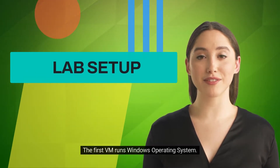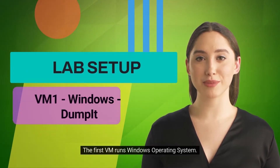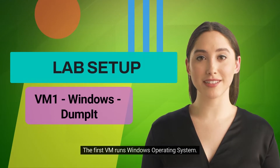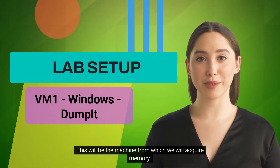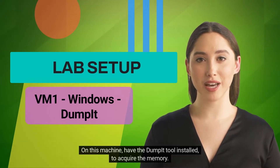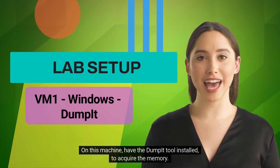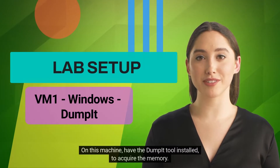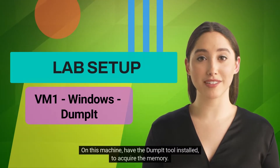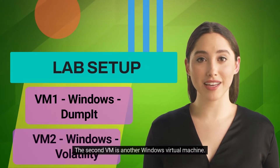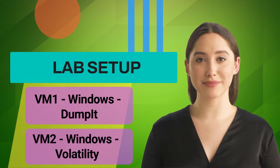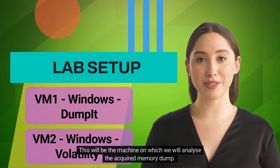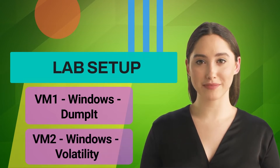The first VM runs a Windows operating system. This will be the machine from which we will acquire memory. On this machine, have the DumpIt tool installed to acquire the memory. The second VM is another Windows virtual machine. This will be the machine on which we will analyze the acquired memory dump.